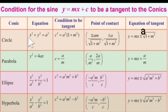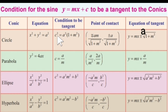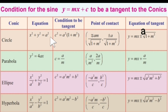First let us see for the circle. The general equation of the circle is x square plus y square equal to a square. The condition for tangency is c square equal to a square into 1 plus m square. In this condition, c and m are taken from the straight line equation — m represents the slope and c represents the y intercept. The value a is taken from the circle equation, which is the radius. If this condition is satisfied, the straight line y equal to mx plus c is tangent to that circle.